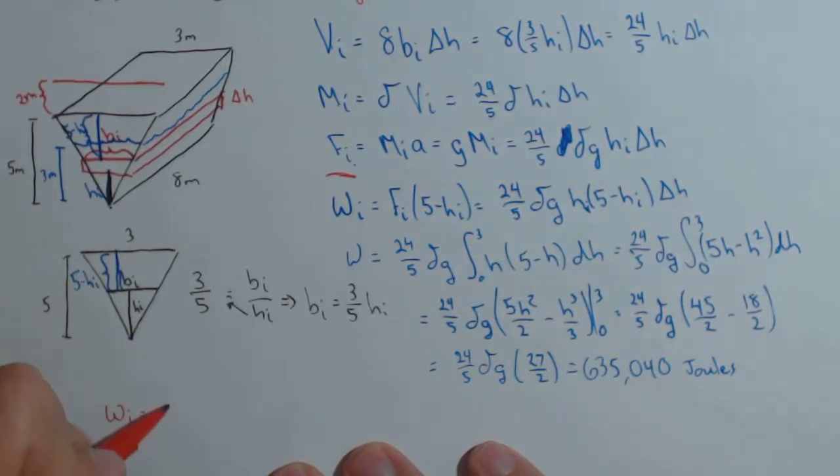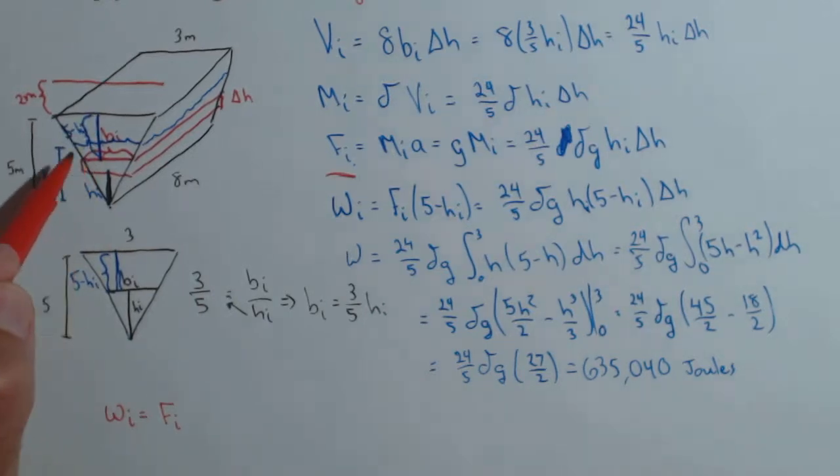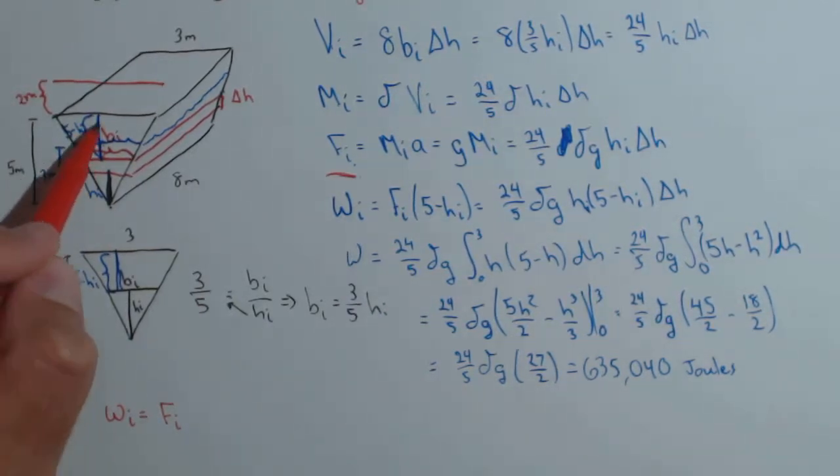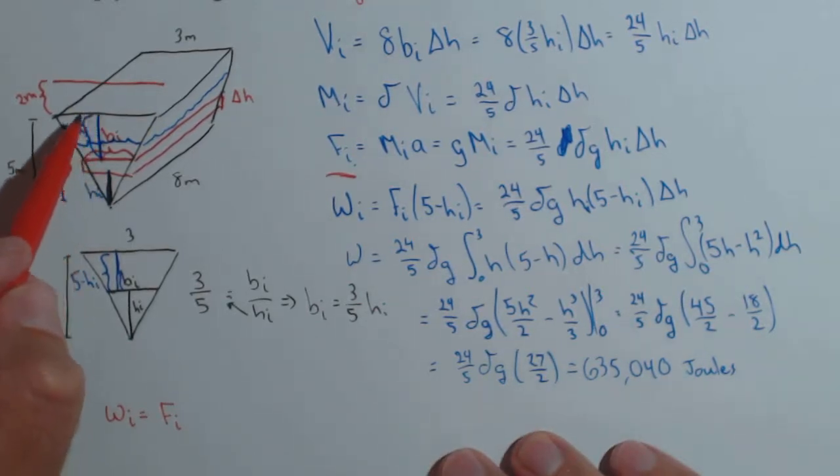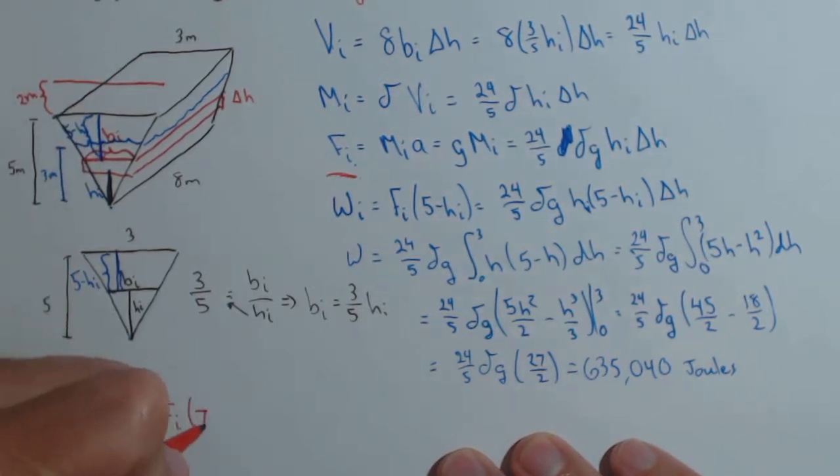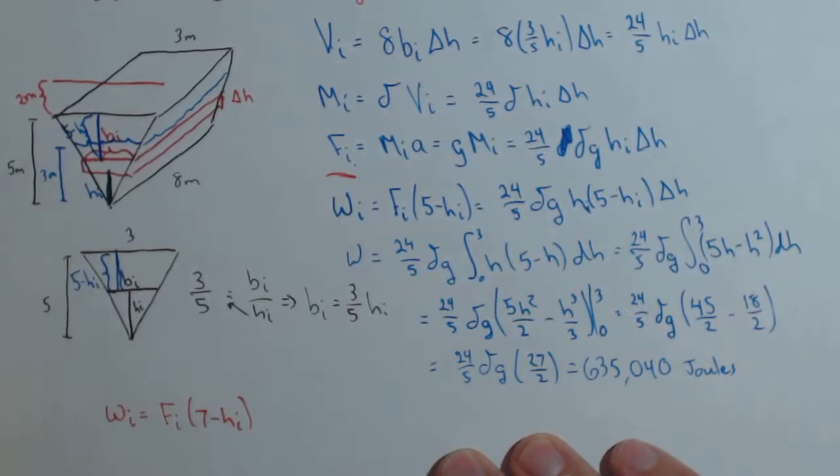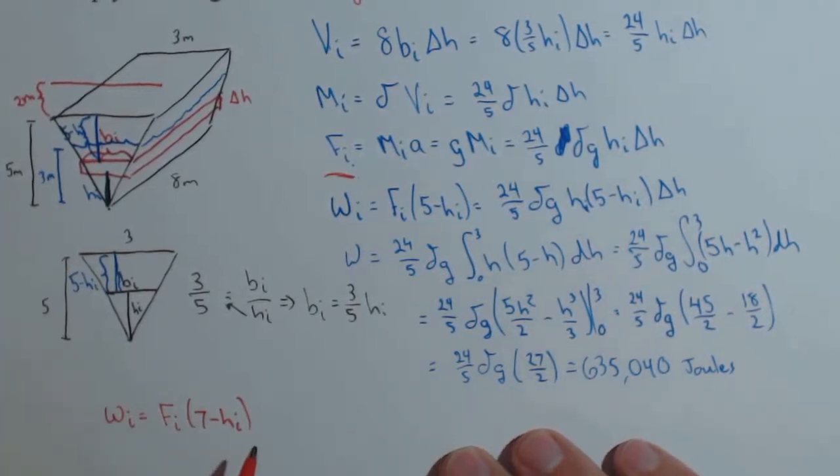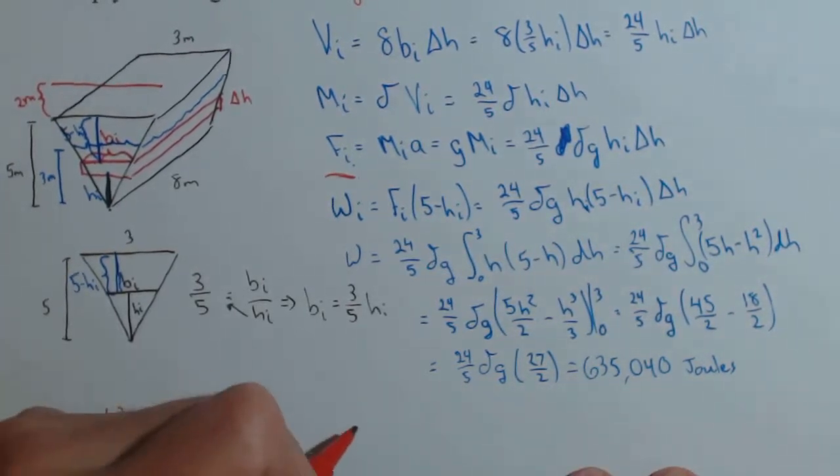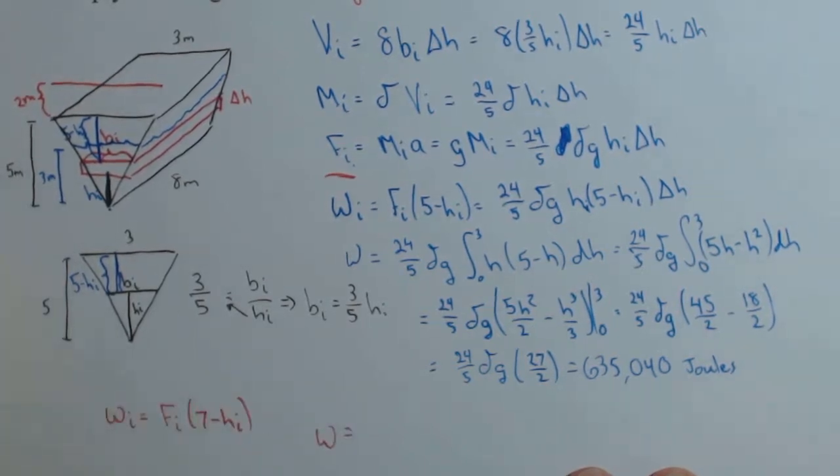The work on the i-th slice is going to be the force on the i-th slice times the distance of moving that. Well, we know from here to here was 5 minus h sub i. And now we need to move that 2 meters further. So this is actually going to now be 7 minus h sub i. That's the only difference as far as our work on the i-th slice.